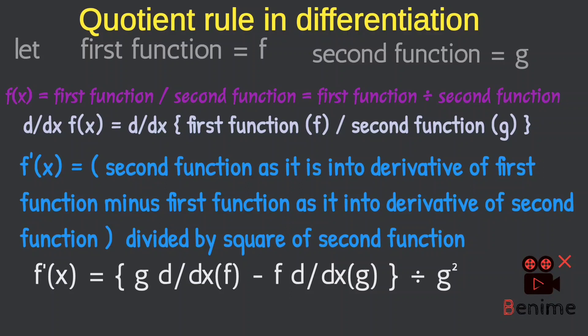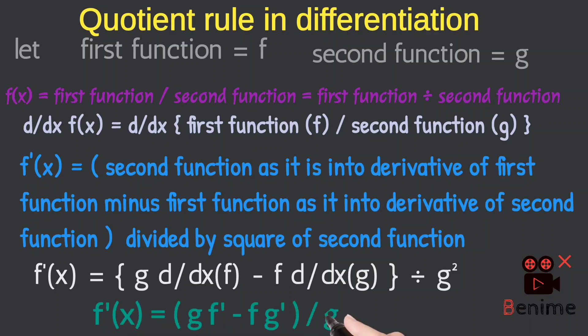The whole expression is divided by the square of the second function G. So the general form of the quotient rule becomes: F dash X equals G times F dash minus F times G dash, all divided by G squared.